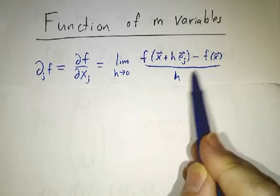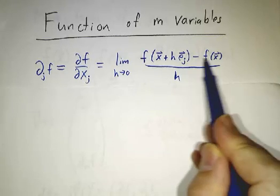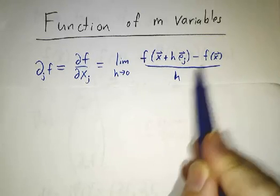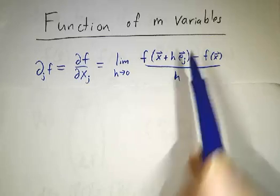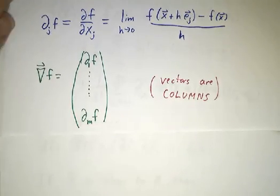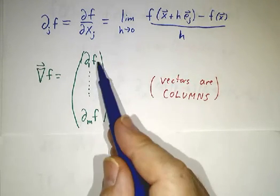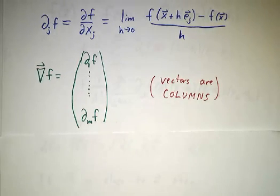Minus f(x). And we divide. We see how the function changes as you move in the e_j direction, divide by the change in x_j and take a limit. And then we put all the partial derivatives together to make a vector called the gradient of f. It's a derivative with respect to x_1, x_2, x_3, all the way through x_m.